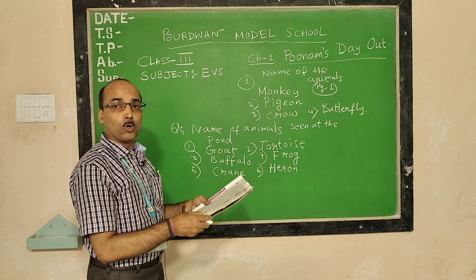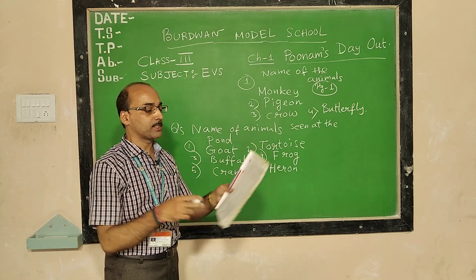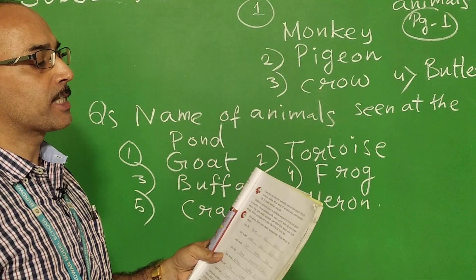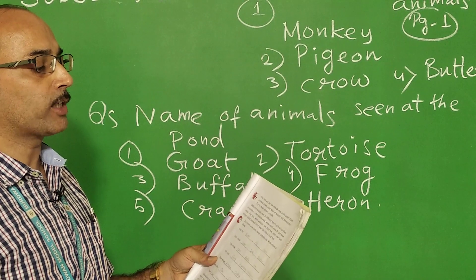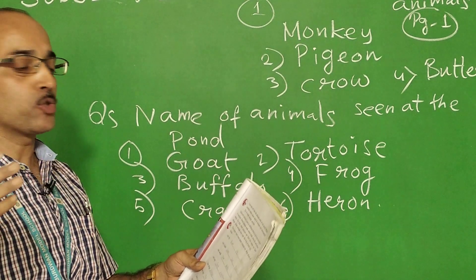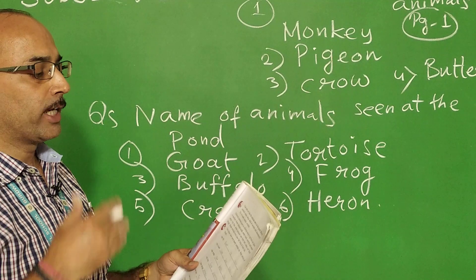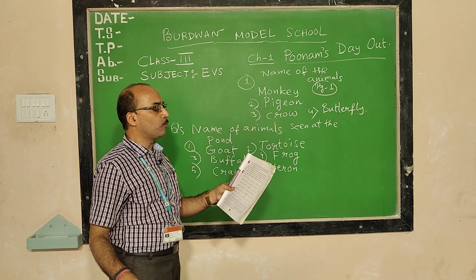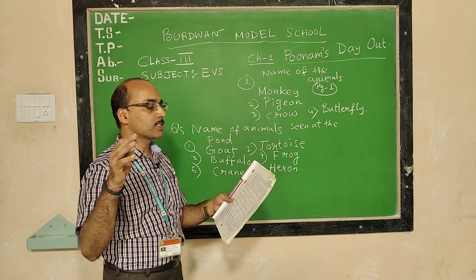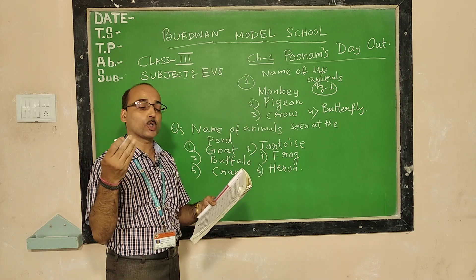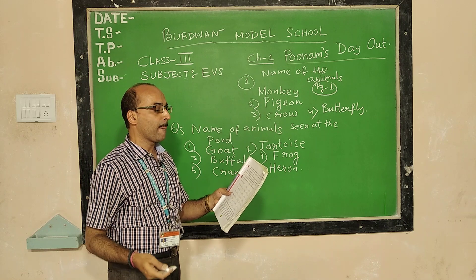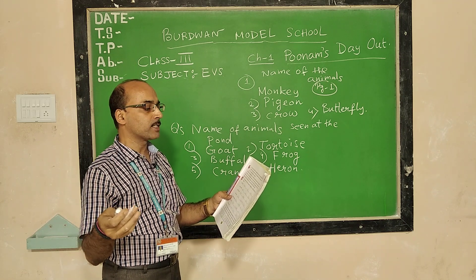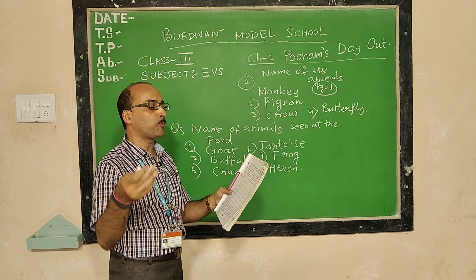Then go to the next page, page number 3. 'Can you act like the animals seen at the pond? Which animal makes what kind of sound and movements? Try to make similar sounds.' Different animals move in different ways to go from one place to another. Some animals walk, some crawl, some fly and some swim. Some animals use their feet, some use their wings, and some animals even take the help of their tail.